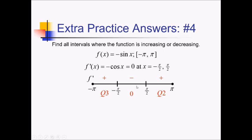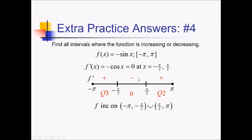Going by these intervals, we can say that we are increasing — since we have a positive f prime — on the interval from negative pi to negative pi over 2, union pi over 2 to positive pi. They only wanted between negative and positive pi for this problem. For decreasing, f prime is negative between negative pi over 2 and positive pi over 2, so we can say f is decreasing on that interval.